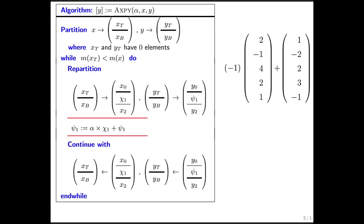This is an example of an AXPY operation where we do a scalar minus 1 times a vector of size 5 and add it to a vector of size 5. This is alpha x plus y. This particular algorithm overwrites y with the result.